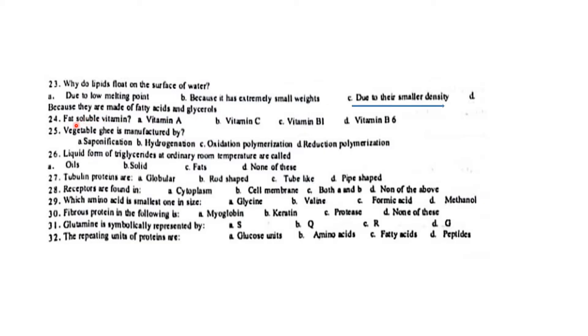Fat-soluble vitamins include vitamin A and others, while vitamin B and C are water-soluble. Oils are the liquid form of triglycerides at ordinary room temperature and are made of unsaturated fatty acids. Oils are manufactured by hydrogenation.